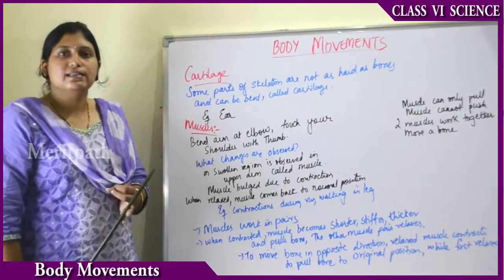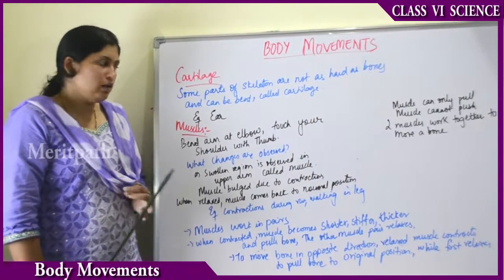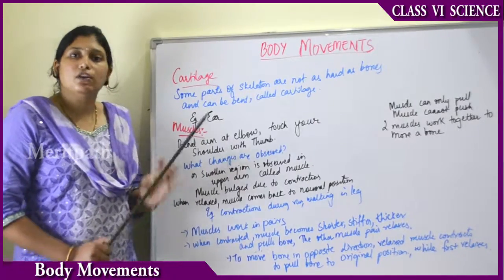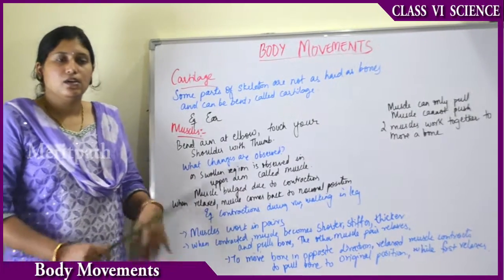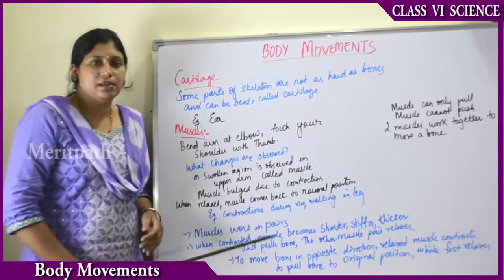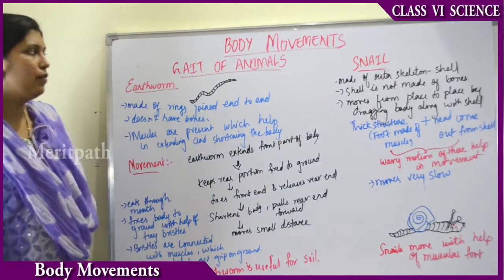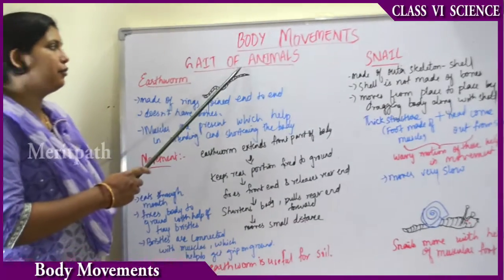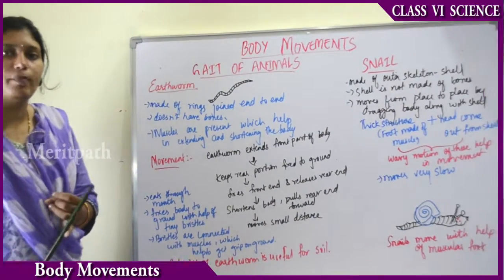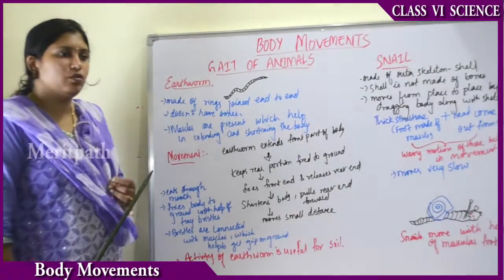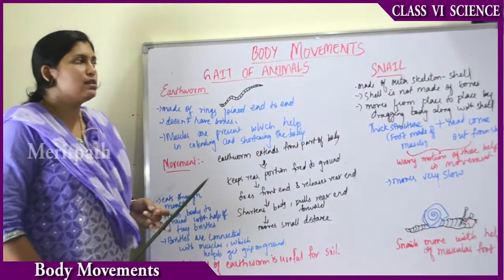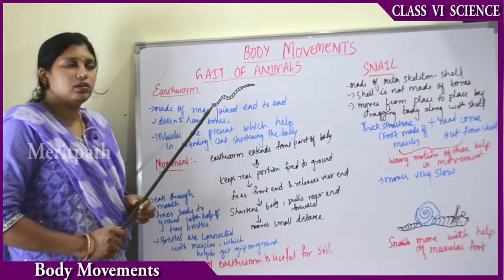Movements occur with the contraction and relaxation of alternate pairs of muscles, especially movements in the hands and legs. This is about muscle and body movement in human beings. Now we will see body movements in animals. Moving on to the gait of animals — gait means the pattern of movement of the limbs of animals.